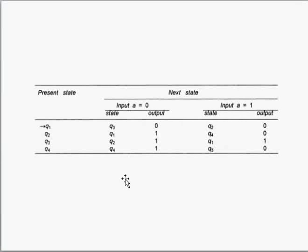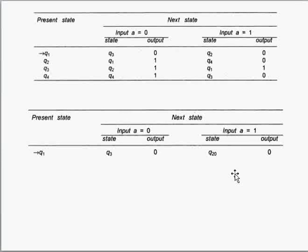To start, we will first analyze which is our starting state. Our starting state is q1, so we write down q1 here. Then we will see: if we apply 0 over q1 then where are we going? We are coming to q3.